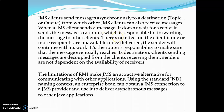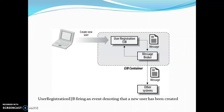The limitations of RMI make JMS an attractive alternative for communicating with other applications. Using the standard JNDI naming context, an enterprise bean can obtain a JMS connection to a JMS provider and use it to deliver asynchronous messages to other Java applications. For example, a user registration EJB fires a message event denoting that a new user has been created. A client makes a request to create a new user, the user registration EJB uses the message broker, creates a message, and sends it to other systems without waiting for what exactly happens to those other systems or clients.